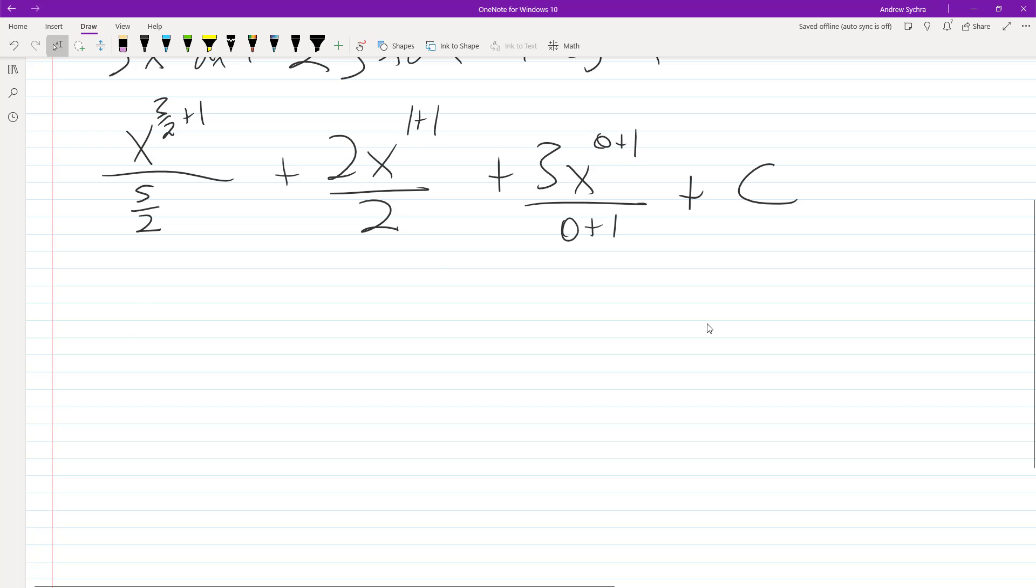All right, so what we end up here with is 2 fifths x raised to the 5 halves, plus x raised to the 2nd, plus 3x plus c.